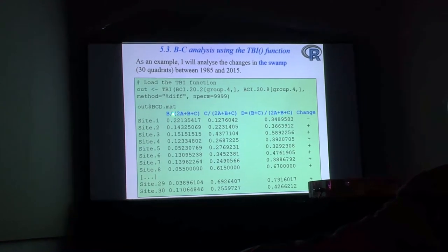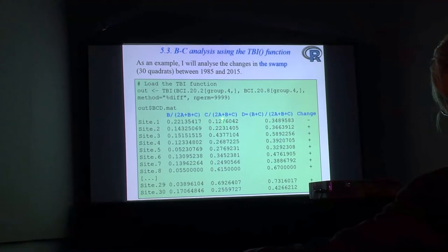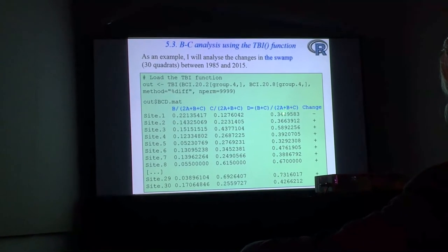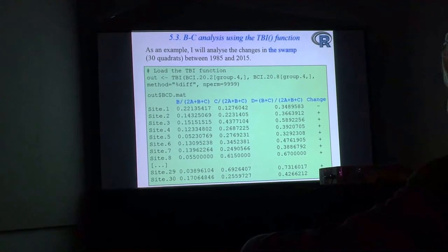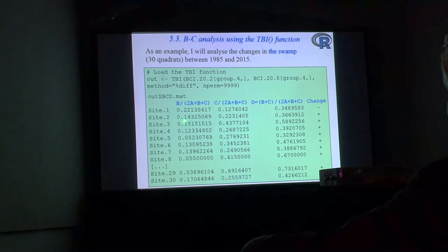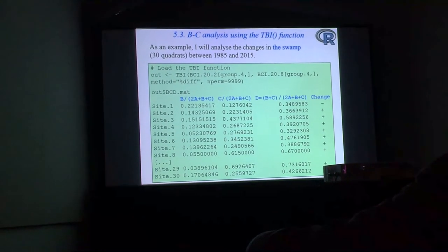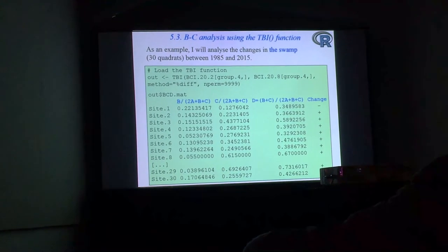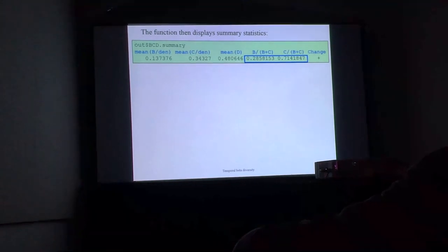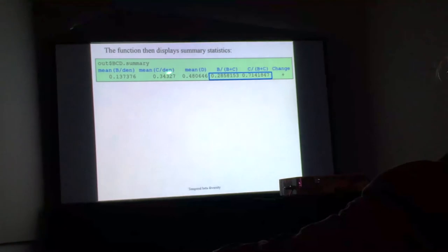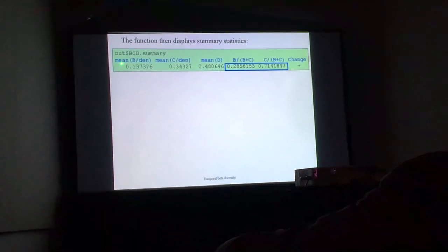One piece of output is this table, where for each site we measure the B component—the losses of species—and the C component, the gains of species. B plus C equals the dissimilarity. The function tells us whether there has been a loss or gain of abundances per species for that site. For quadrat number two, C is larger than B, so there's a plus sign. For most of the quadrats in the swamp, we have plus signs, meaning there have been gains of abundances per species. The function displays a summary with the mean value of losses and mean value of gains, the denominator, and the mean dissimilarity. We also see the contribution of losses and gains over the dissimilarity portion, so the change is strongly positive for these sites of the swamp.